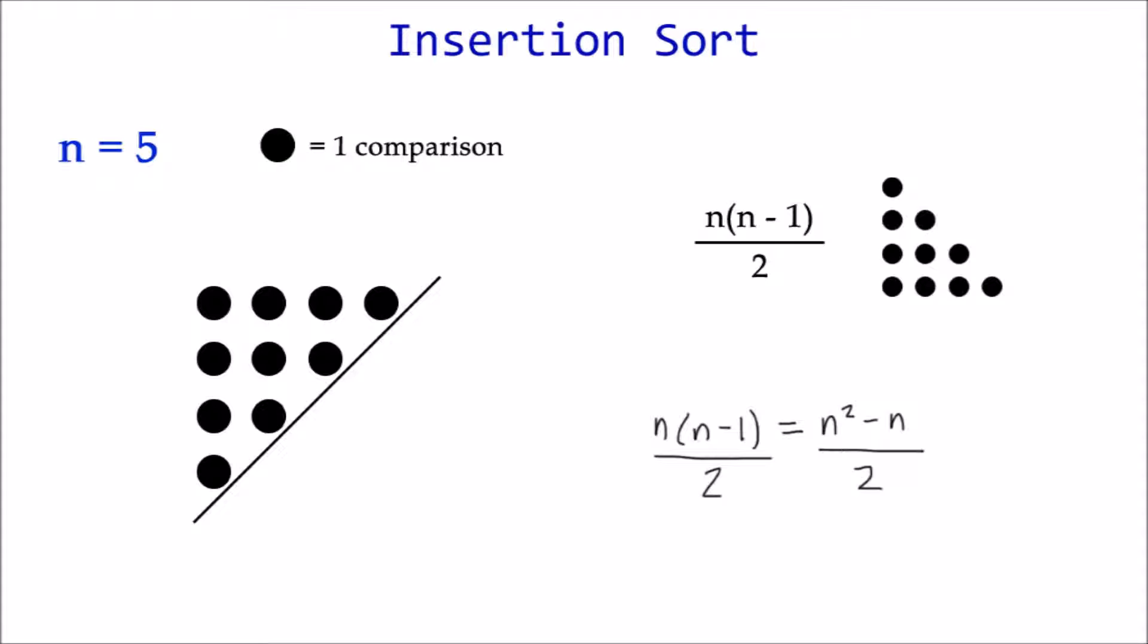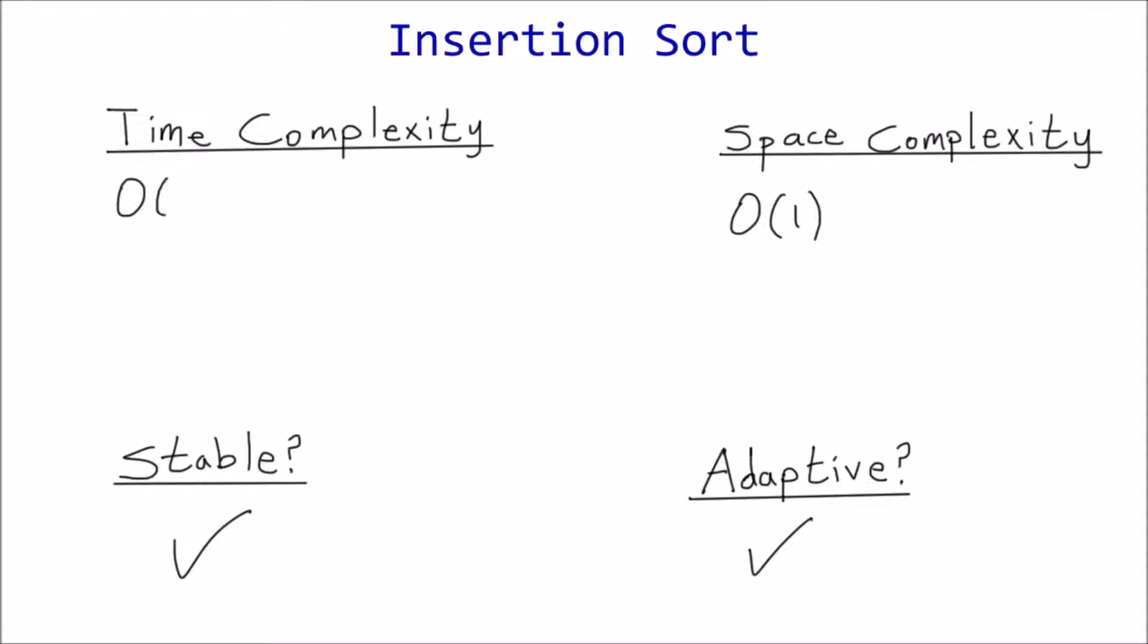Big O notation only cares about the highest order term of the polynomial, so worst case is big O of n squared.